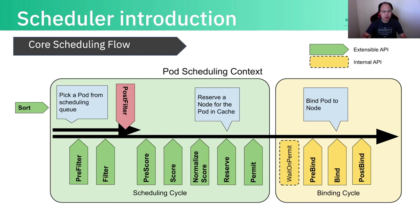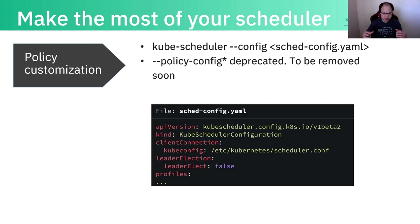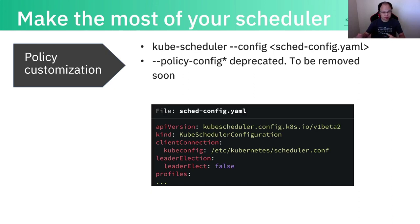Next, I call it making the most of your scheduler. The first part I call policy customization. The scheduler is a box with a lot of knobs or options. If the default options don't work for you, you can adjust them. One thing to keep in mind is that if you want to use some latest features or options, you have to use the --config flag followed by the scheduler config YAML. This YAML is the most standardized and organized way to use these kinds of options.